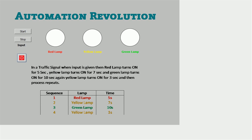Today in this video I will explain traffic signal controlling using different timers. In the basic instruction video you have already seen different timers like TON, TOFF, and pulse timer, retentive timer that we have used in Siemens PLC. The application is: when we give input, there are three lamps — red, yellow, and green. The red lamp will turn on for five seconds, then yellow lamp for seven seconds, then green lamp for ten seconds, then yellow lamp for three seconds, and this cycle will continuously repeat.